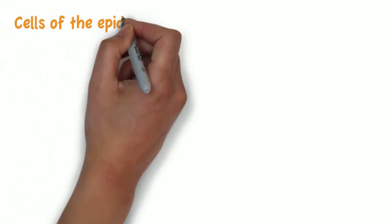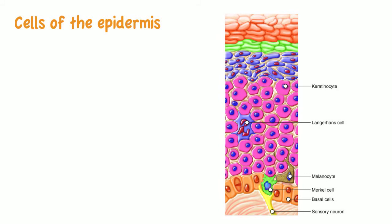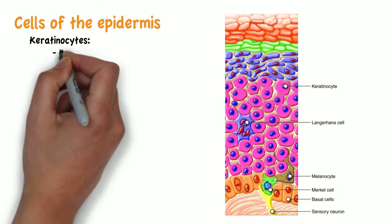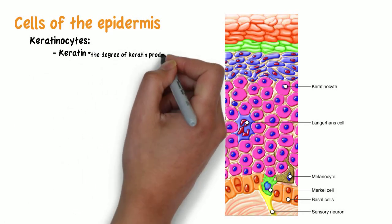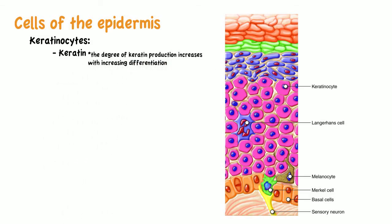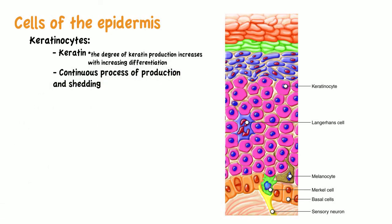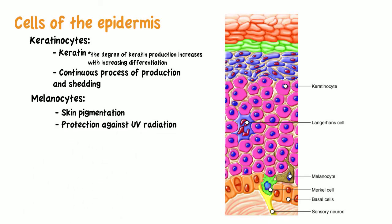The most abundant cells in the epidermis are keratinocytes — the cells that produce keratin, with the degree of keratin production increasing with differentiation. These cells undergo a continuous process of production and shedding. Melanocytes are responsible for skin pigmentation and protection against UV radiation. They are dendritic in shape, reside in the lower layers of the epidermis where they synthesize melanin, and melanin is packaged into melanosomes and transferred into neighboring keratinocytes.